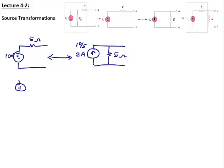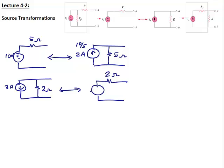What about if we have a current source in parallel with a resistor? Let's say I have 3 amps in parallel with 2 ohms. If I do the source transformation for this one, it becomes a voltage source in series with a resistor. The resistor stays the same, so it's still 2 ohms. The voltage source would be 3 times 2, which is 6 volts. Notice that the arrowhead points down, so this voltage source would be positive on the bottom and negative on the top.